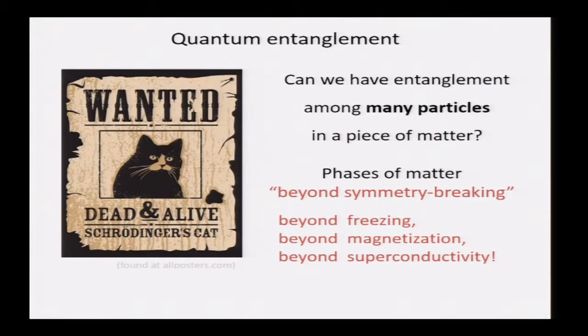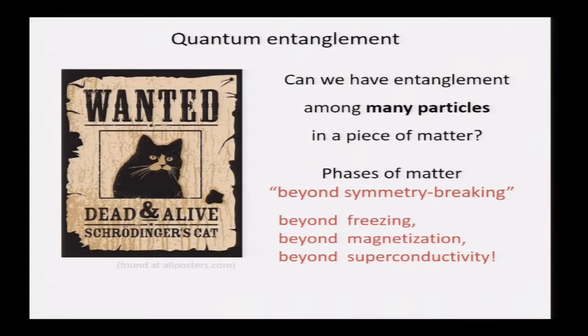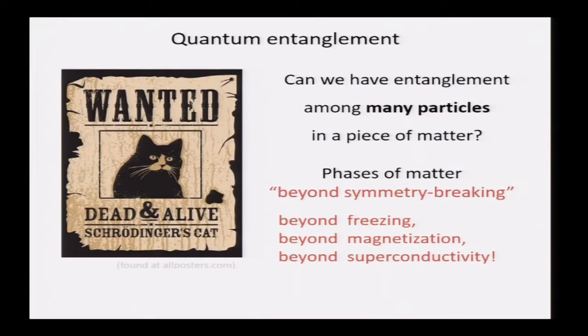Another way to phrase this is we're looking for phases of matter that are beyond symmetry breaking — that's the buzzword. Symmetry breaking is a concept prevalent throughout physics and high-energy physics. We know examples of symmetry-broken states of matter: freezing water into ice is a kind of symmetry breaking, or a magnet like iron, or even a superconductor — that's very quantum but still a kind of symmetry breaking. Now we want to ask: can you imagine entanglement between all the electrons and atoms in a material that's beyond this? In the Schrödinger cat analogy, symmetry breaking would be it collapsing to alive or dead, while we want some entangled state that remains in a delicate dance of entanglement.